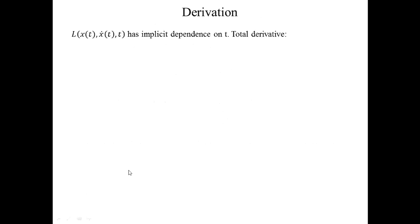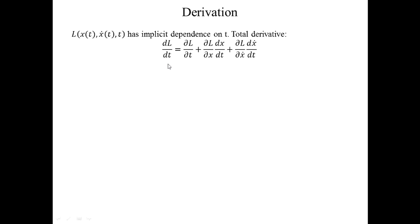The first thing I'm going to do is go back to the Lagrangian and note that it has implicit dependence upon t. That is, if I change the value of t, I do affect the values of x and ẋ, which will then affect the value of the Lagrangian. So I'm going to take the total derivative of the Lagrangian with respect to time, applying the chain rule. I have the explicit dependence upon t as ∂L/∂t, and then the next two terms are due to the implicit relation upon t — this is just basic chain rule going through each variable.